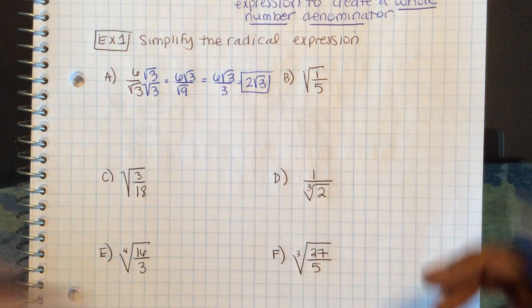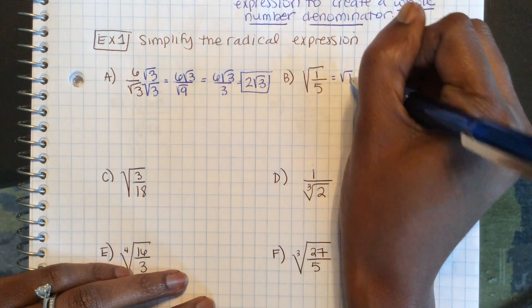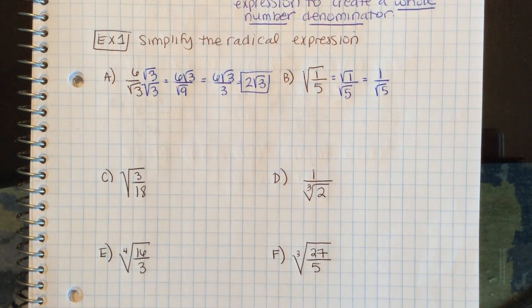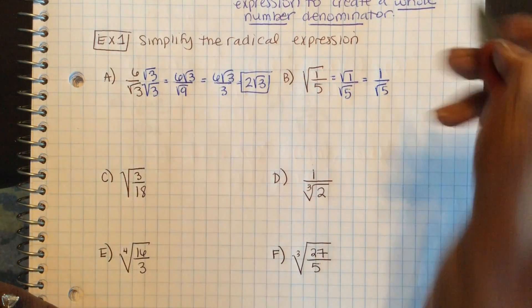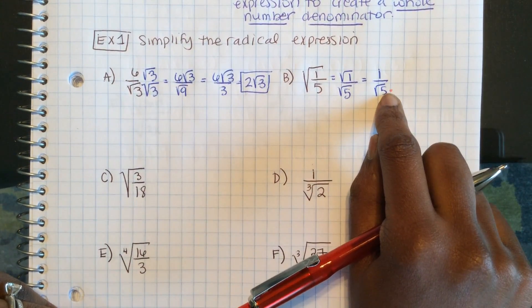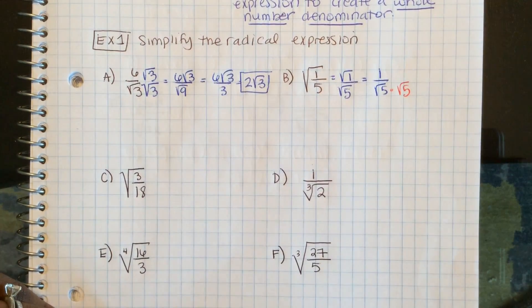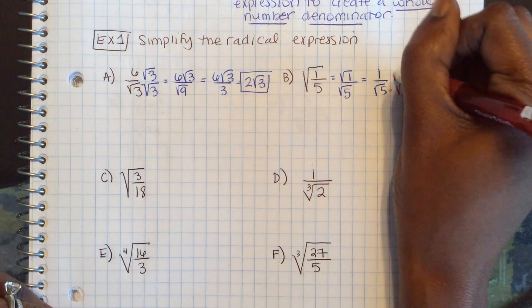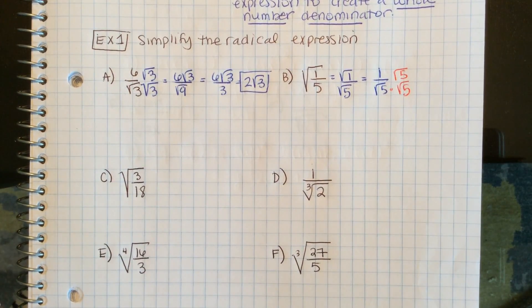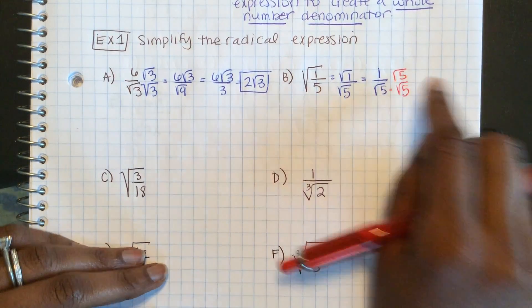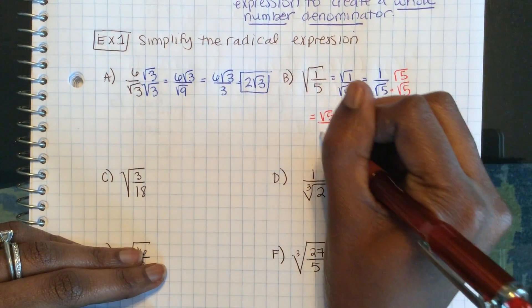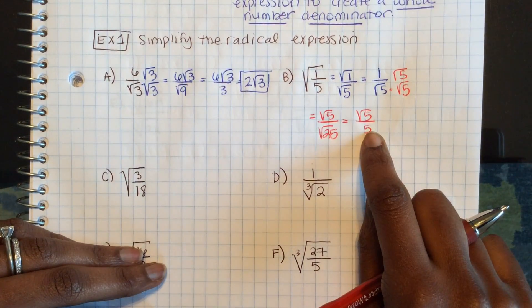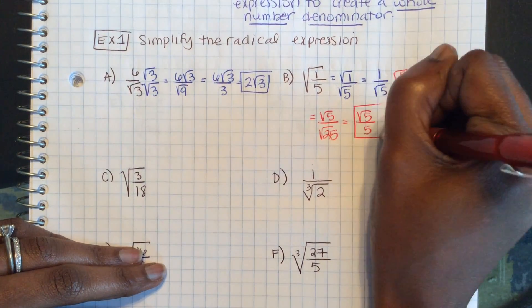So, here, if I look at Part B, I can break this down to be square root of 1 over square root of 5, which is 1 over the square root of 5. Now, we do not like to leave radicals in the denominator. So, I can multiply the square root of 5 times the square root of 5 to make the square root of 25, which is a whole number. But if I multiply that to my denominator, I have to multiply it to my numerator. So, 1 multiplied by square root 5 is square root 5 over square root 25. Well, square root 25 is 5. Now, that I have a whole number in my denominator, it is simplified.